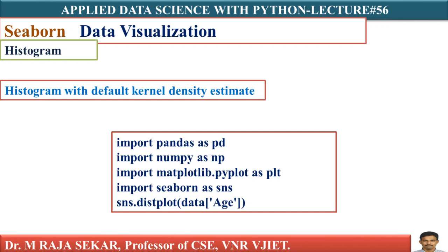Supplying age as input to the distplot function will construct the histogram. Histograms are plotted to check the frequency distribution of any continuous variable. Here, age is a continuous variable from the data frame, and we are interested in understanding the frequency distribution of age — how the values are distributed under the age variable.